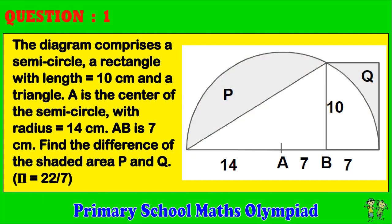Question 1. The diagram comprises a semicircle, a rectangle with length equals 10 cm, and a triangle. A is the center of the semicircle, with radius equals 14 cm. AB is 7 cm. Find the difference of the shaded area P and Q, pi equals 22 over 7.